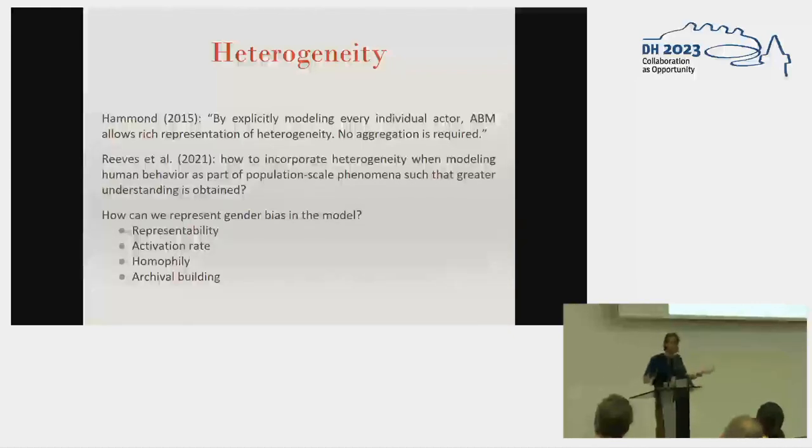Another thing is heterogeneity. This is the main point of agent-based modeling—allowing you to not have representative agents. Each agent can be different with different variables, and this can play a role in how networks are built. We started discussing gender, for example: people can have different activation rates, more homophily, more likely to connect with one another, more likely to write about certain topics that are less likely to preserve, or simply their letters don't survive in time. Does that affect the overall network?